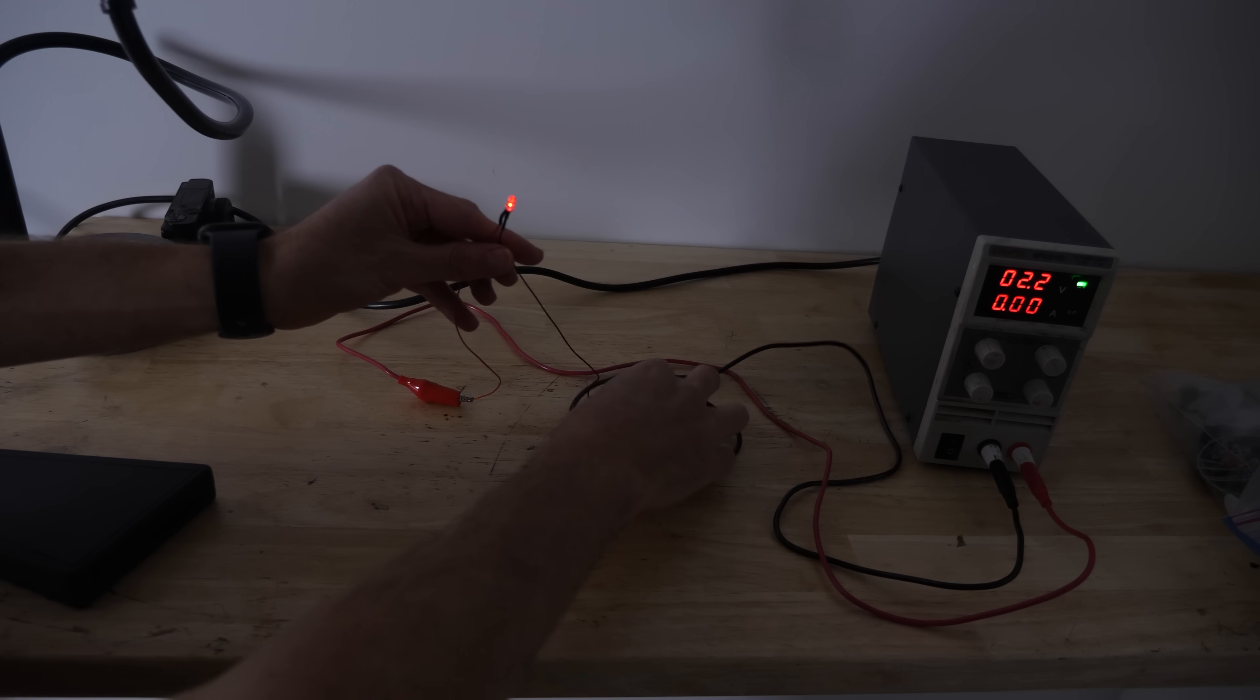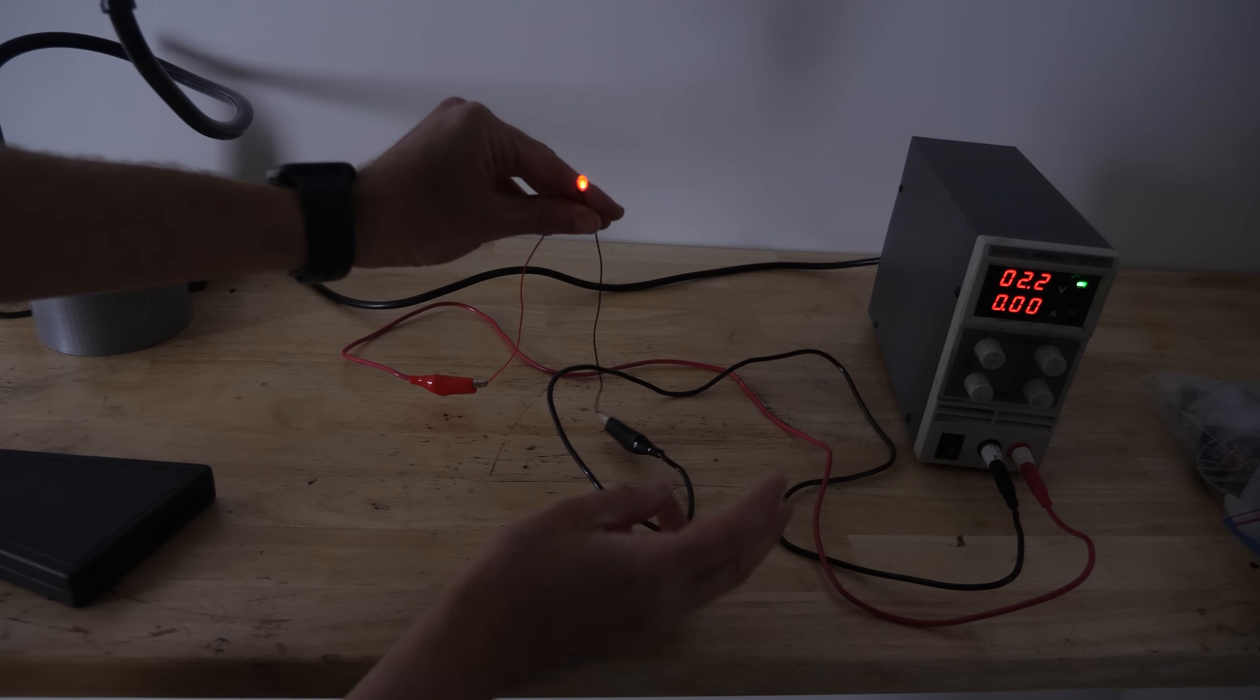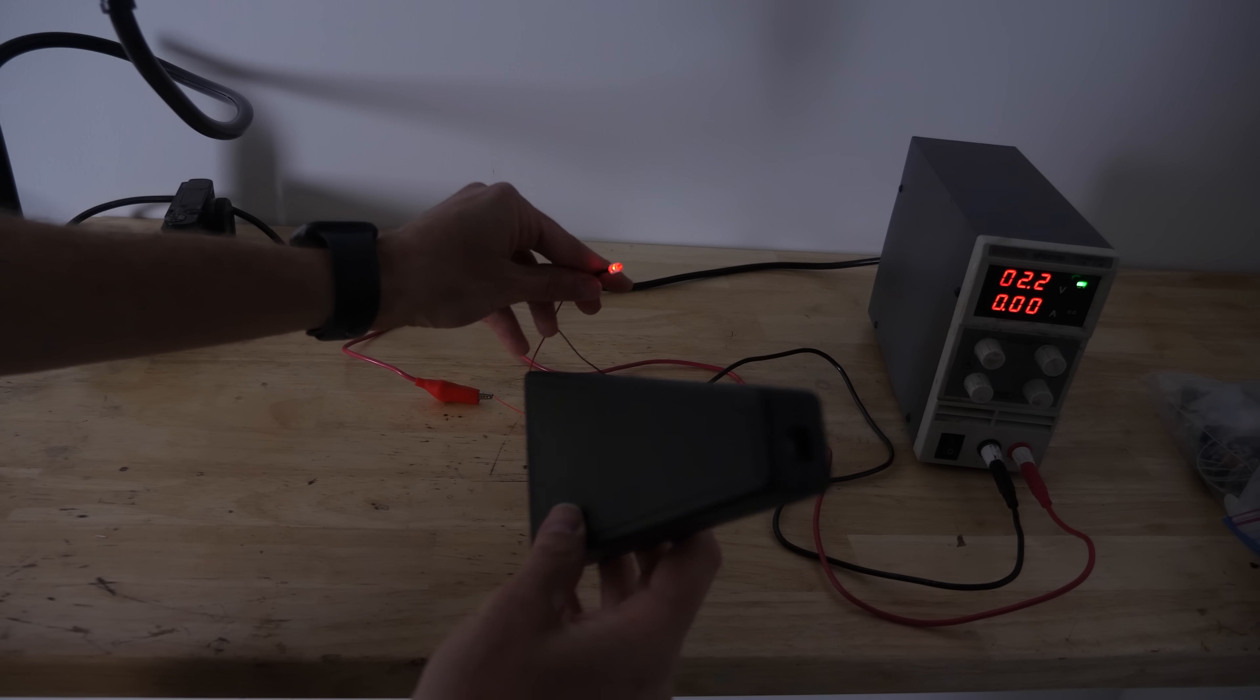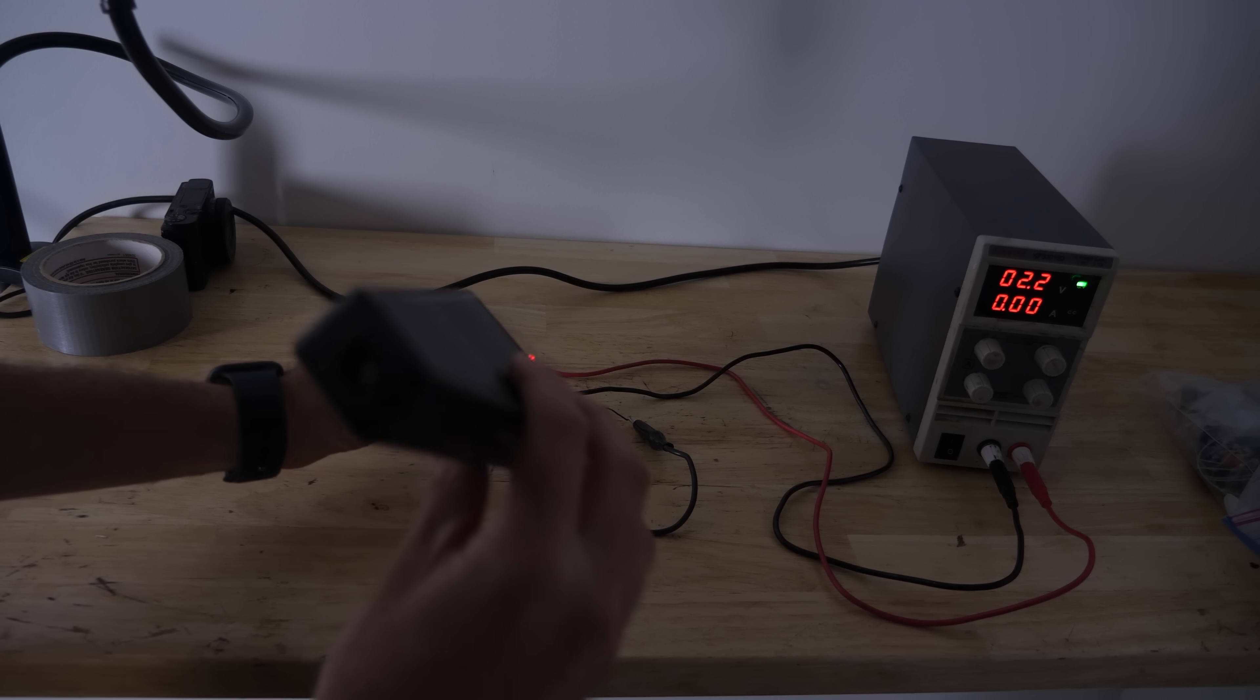Okay, so first we're going to start with this red LED. So we know it's red but we have to know the exact frequency of the LED. So I have here a little handheld spectrometer that you can look through and see a scale of what the wavelength is here.